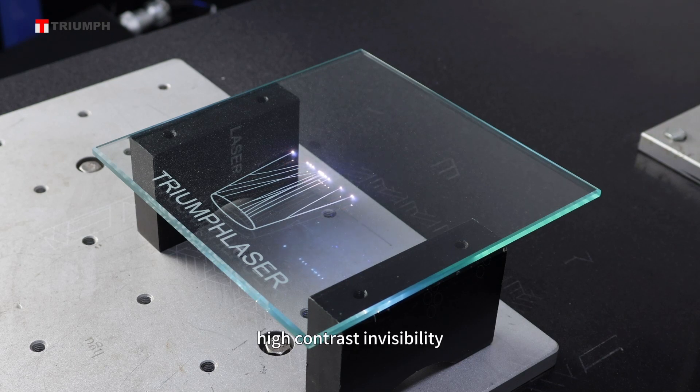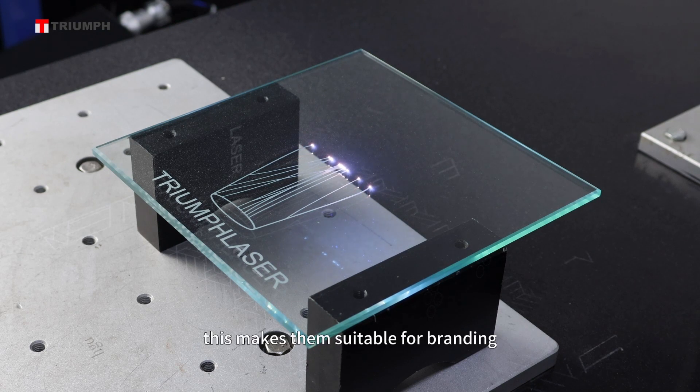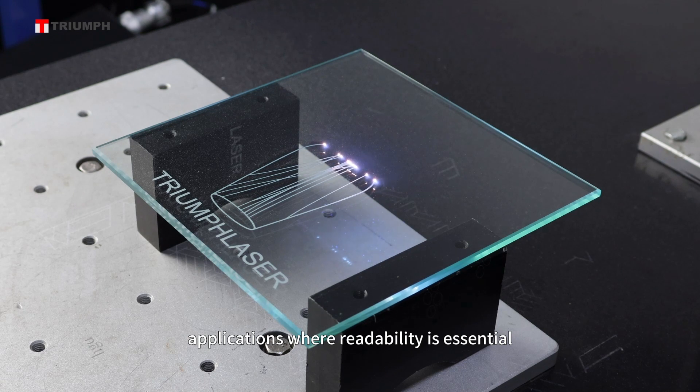High contrast and visibility. UV laser marks on glass exhibit high contrast and visibility, even on transparent or translucent surfaces. This makes them suitable for branding, serial numbers, barcodes, and other applications where readability is essential.